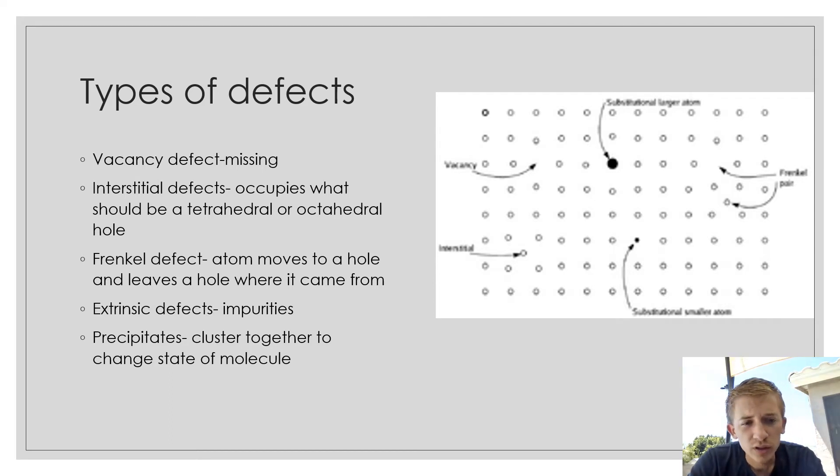The extrinsic defect are any impurities in the material. The precipitates are a cluster of molecules together that change the state of the molecule, maybe from a liquid to a solid.